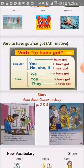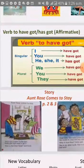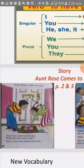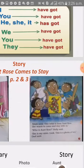Let's see our story for this semester, which is entitled Aunt Rose Comes to Stay, page 2. There was a letter on the mat. Holly and Tom went to get it. Who is this letter from? said Holly. Mom said: This letter is from Aunt Rose. She wants to come and stay with us. Who is Aunt Rose? Holly said. She is my sister. Look, this is a photo of her. Dad said.